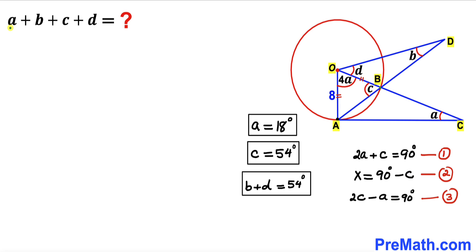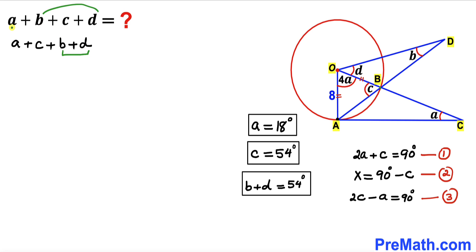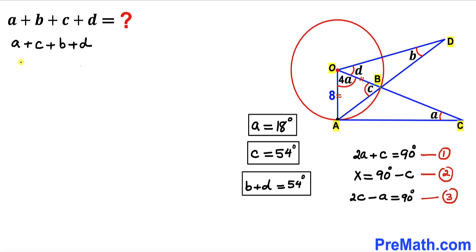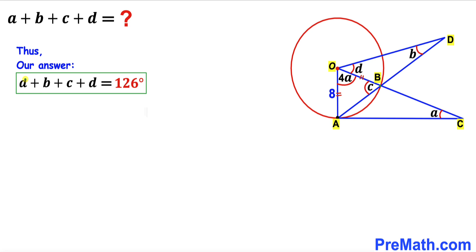Now for our final step, let's calculate A plus B plus C plus D. Rearranging, this is A plus C plus (B plus D). We know A equals 18 degrees, C equals 54 degrees, and B plus D equals 54 degrees. So 18 plus 54 plus 54 gives us 126 degrees. Therefore A plus B plus C plus D equals 126 degrees.